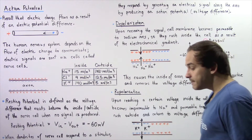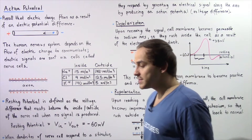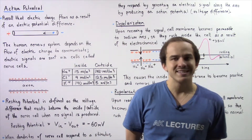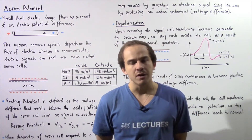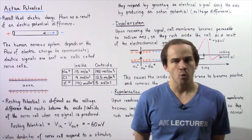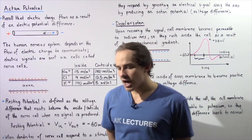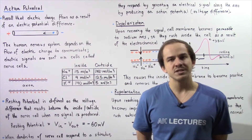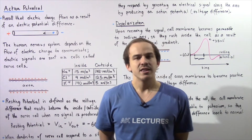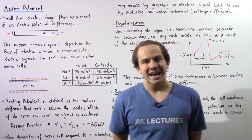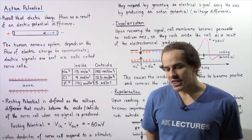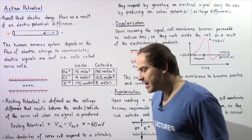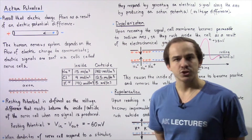Let's begin by defining what an electric potential difference is. An electric potential difference is essentially a separation of electric charge between two points. As a result of a separation of electric charge, an electric potential difference will exist that will create an electric field, and that electric field will essentially create an electric force that will move electric charge.